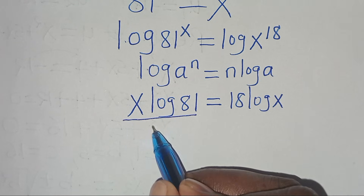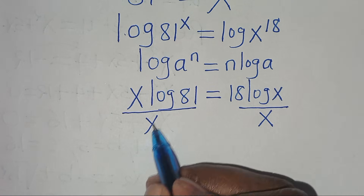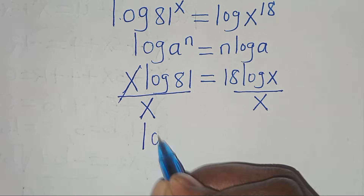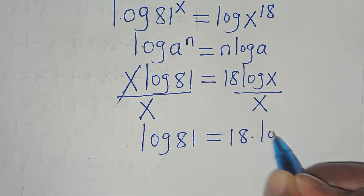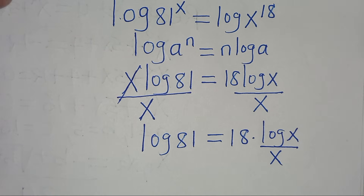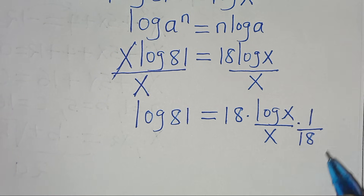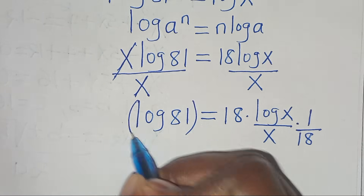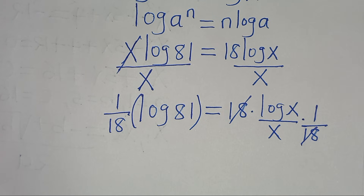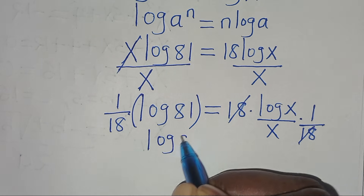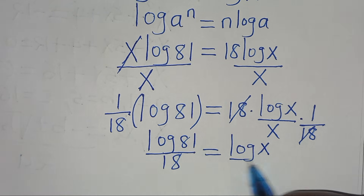The next step is to divide both sides by x. So let's simplify x and x, so that now we have log 81 equals 18 times log x divided by x. The next step is to multiply both sides by 1 over 18. So we can simplify 18 and 18, so that now we have log 81 divided by 18, this is equal to log x divided by x.